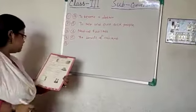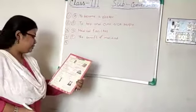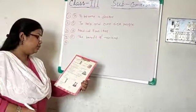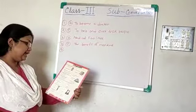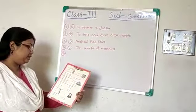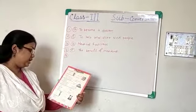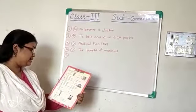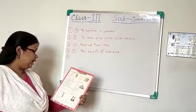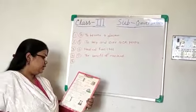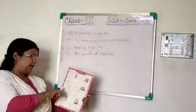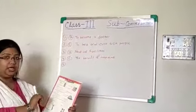Question number 5: someone whom you know well and share everything is known as — A, a friend; B, a sibling; C, a neighbor. The answer is option A: a friend.